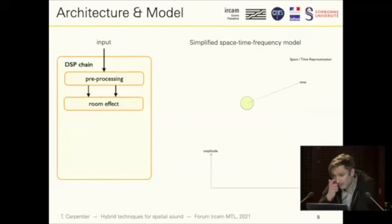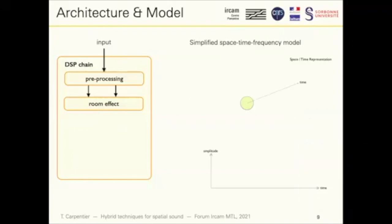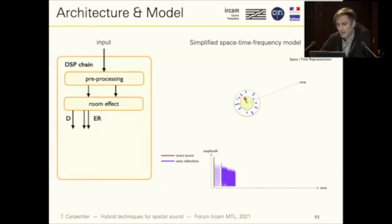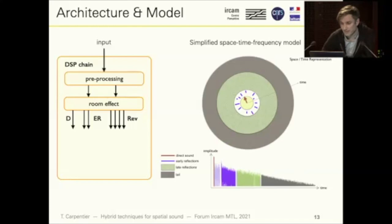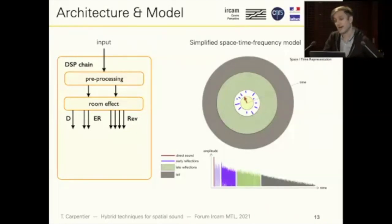The signal then goes into an artificial reverberator, which generates a room effect delivering what we call an object-oriented internal representation, based on a space-time-frequency model. First, we get the direct sound coming from a given direction in space. Then, a little bit later, we get some early reflections — discrete echoes coming from specific directions in the room. Little by little, we get more and more echoes so the sound field becomes more diffuse, both in time and space. Then we get the late reverberation tail, which is an exponentially decaying sound. That's the typical behavior we render with the room effect module of the SPAT engine.